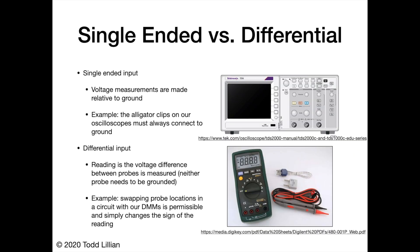Our USB 6341 devices in the lab are capable of switching between single-ended and differential input. In single-ended input, voltage measurements are made relative to ground — for example, with our oscilloscope, the black alligator clip is always connected to ground, and the probe tip measures voltage relative to that ground. A differential input, by contrast, measures the voltage difference between two probe tips, and neither probe tip needs to be connected to ground. For example, the digital multimeters in the lab could be considered to have differential input — we can swap the two leads, and all it does is change the sign of the reading on the screen.